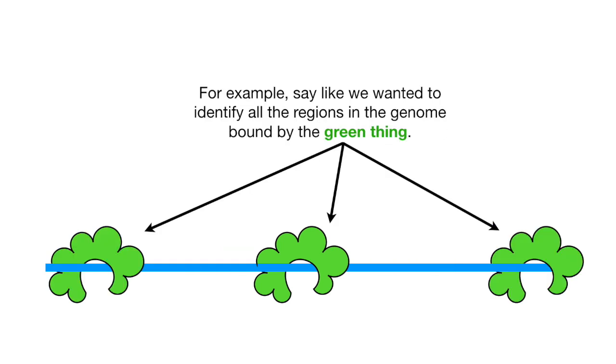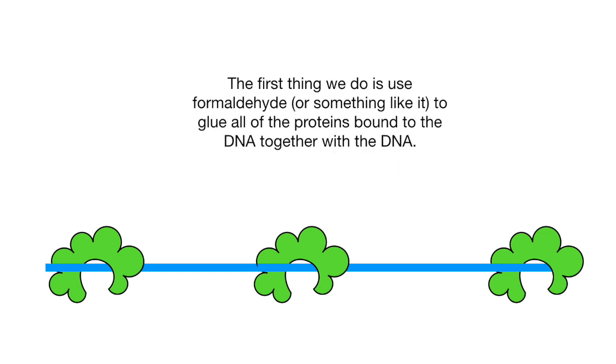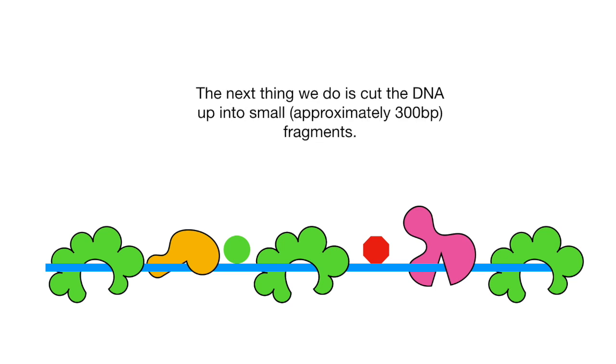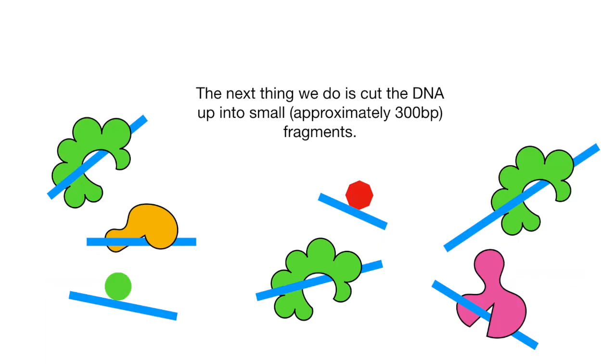For example, say we wanted to identify all the regions in the genome bound by the green thing. The first thing we do is use formaldehyde, or something like it, to glue all the proteins bound to the DNA together with the DNA. This means that all of the DNA bound proteins, including the ones we're not interested in, are glued to the DNA. The next thing we do is cut the DNA up into small, approximately 300 base pair fragments.